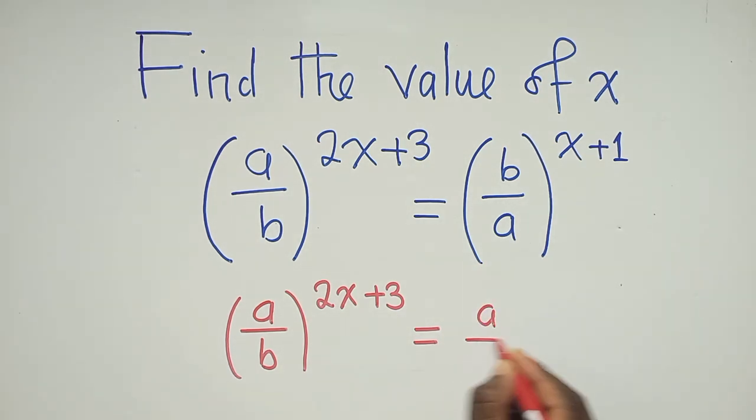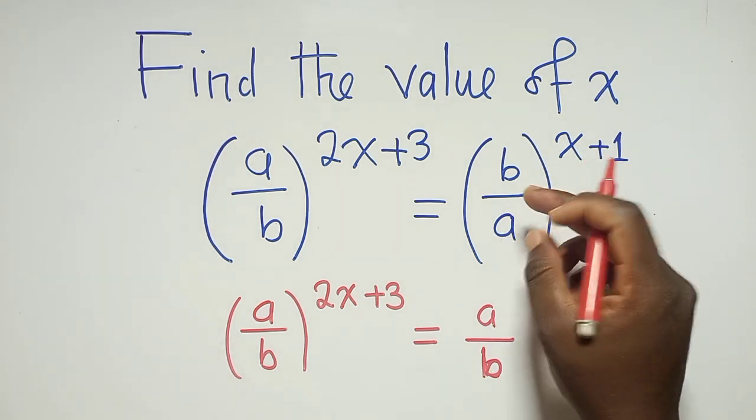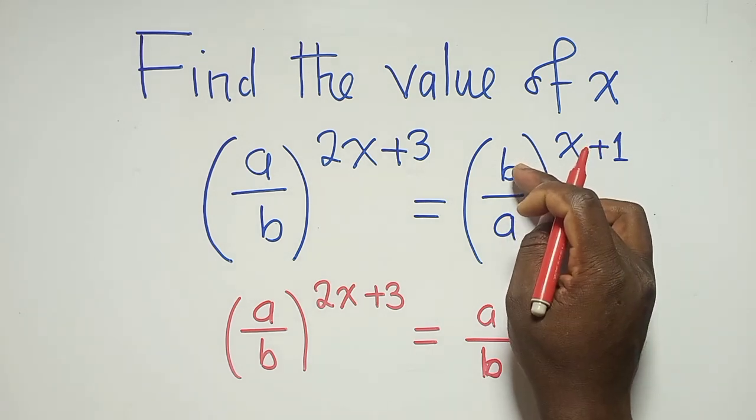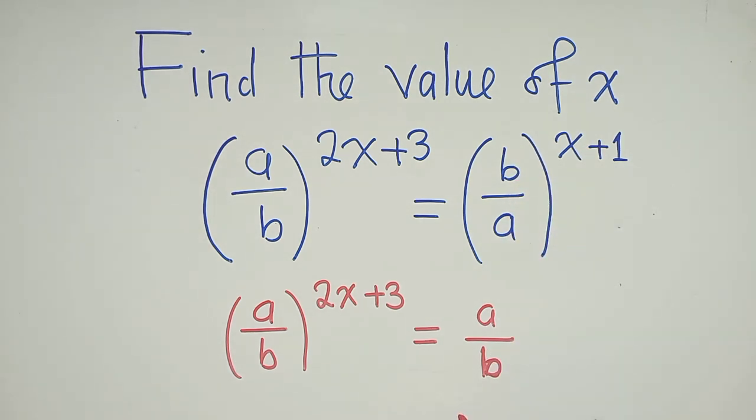is equal to, this side we shall say, a over b. So we reciprocate, we flip, what is down here goes on top and what is on top comes down. This is what we have.